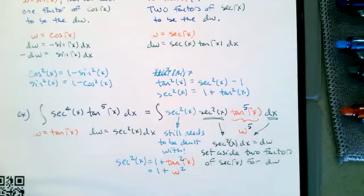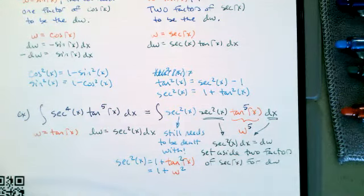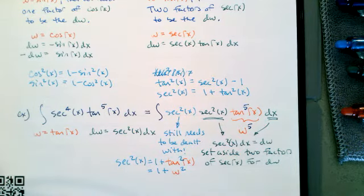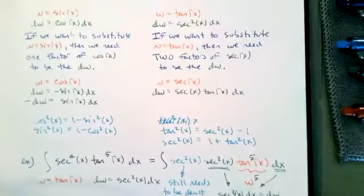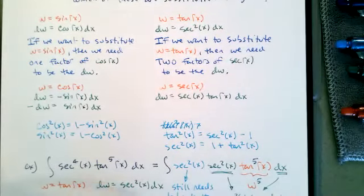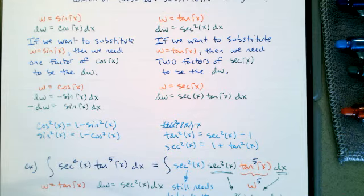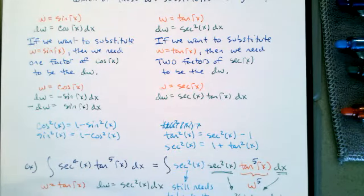To summarize: for secant to the fourth tangent to the fifth, I made the substitution W equals tangent. I saved two factors of secant to be the DW, and I still had two factors of secant left over that I replaced with 1 plus tangent squared — because I had an even number of remaining secants. We'll save finishing that integral for tomorrow. Let's see how things change if I modify the example.